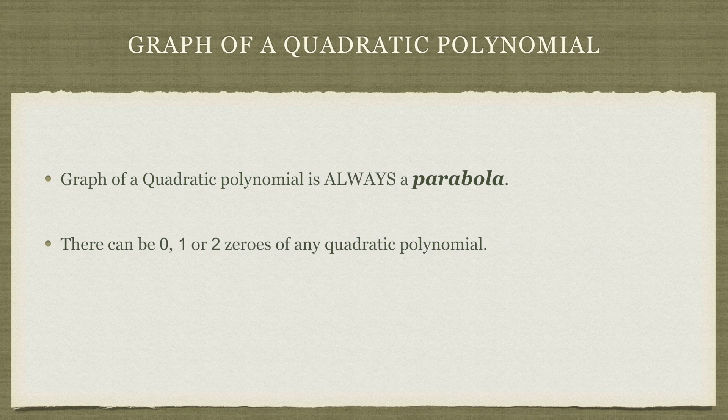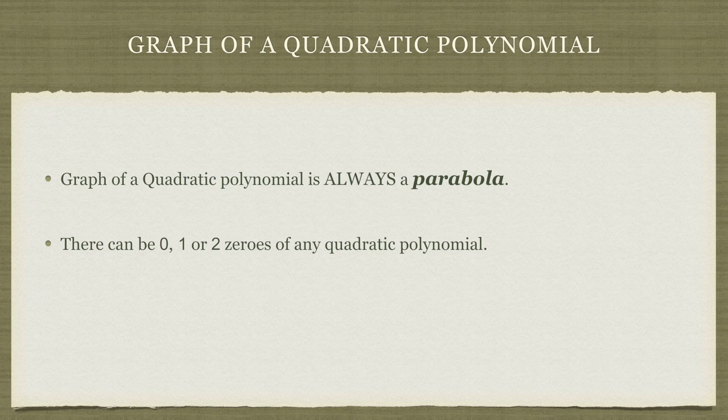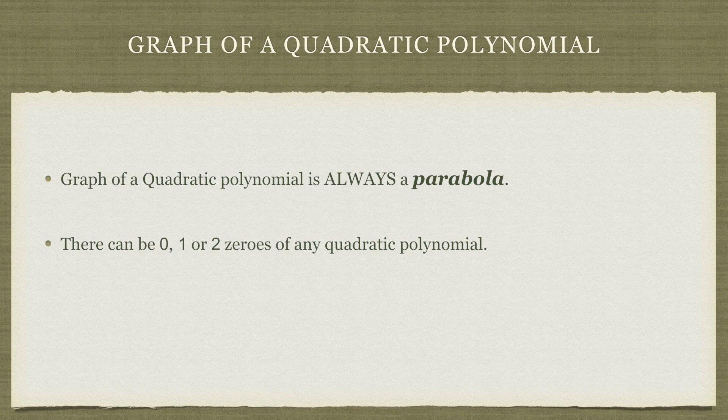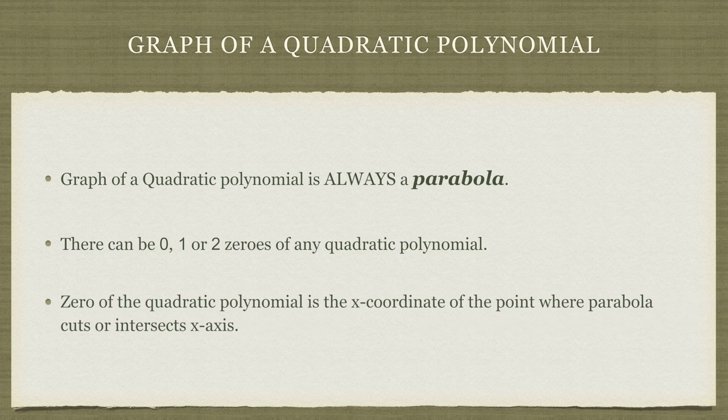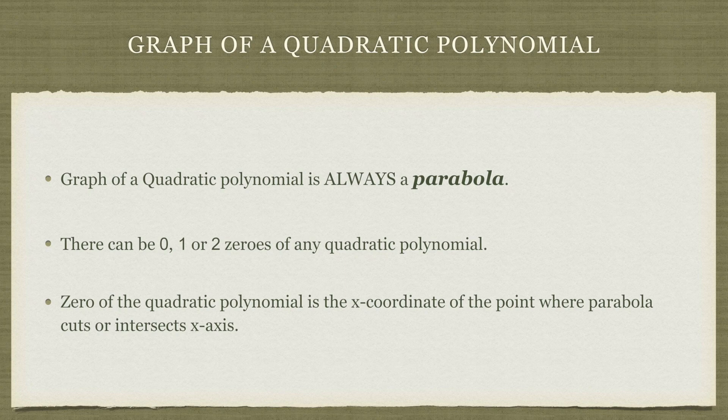In this example we saw two zeros of our quadratic polynomial and like I said in our subsequent videos we will learn that we can have a quadratic polynomial with no zeros or with only one zero of the polynomial and like in this case we saw a maximum of two zeros. We can never have more than two zeros of a quadratic polynomial and finally the zero, if we have a zero of a quadratic polynomial, the zero will be the x coordinate of the point where the parabola cuts or intersects the x axis.